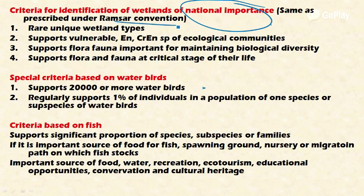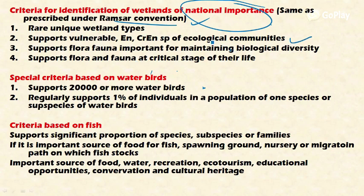The first criterion is that the wetland should contain a representative, rare, or unique example of a natural or near-natural wetland type found within the appropriate biogeographical region — so if any wetland has rare or unique wetland types, it should be considered of national importance. The second criterion is that the wetland should support vulnerable, endangered, or critically endangered species or ecological communities, in order to conserve flora and fauna.